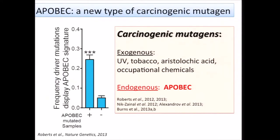I want to stress again that APOBECs are the only known so far strong endogenous carcinogen. We concluded this from looking at cancer mutations — genes considered important for cancer mutagenesis are not avoided by APOBEC mutagenesis. The analysis is in our paper published about a year ago, and three groups including us significantly contributed to this understanding.